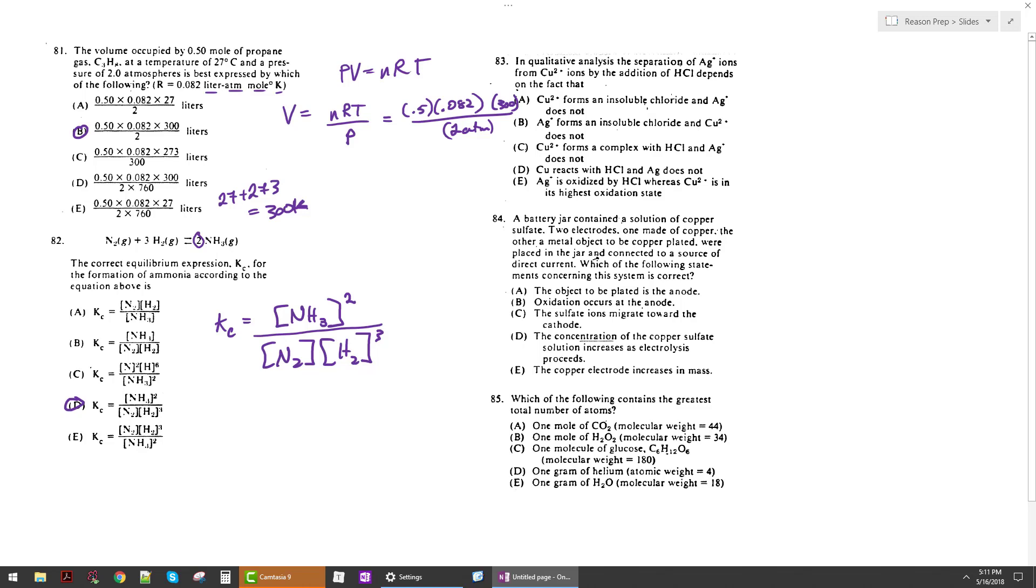In qualitative analysis, the separation of Ag plus from Cu 2 plus by the addition of HCl depends on the fact that, well, remember that Ag plus plus Cl minus yields an insoluble solid, yields a precipitate, AgCl. And so when you add that HCl to this mixture of Ag plus and Cu, your AgCl is going to precipitate. And then in this case, the copper is not. Copper chloride is soluble. So Ag plus forms an insoluble chloride and Cu 2 plus does not. That is true. So 83 is B.